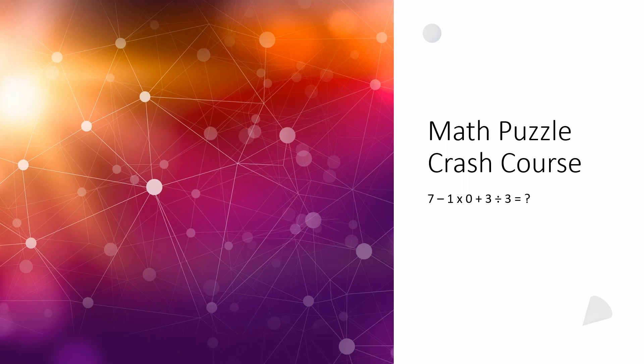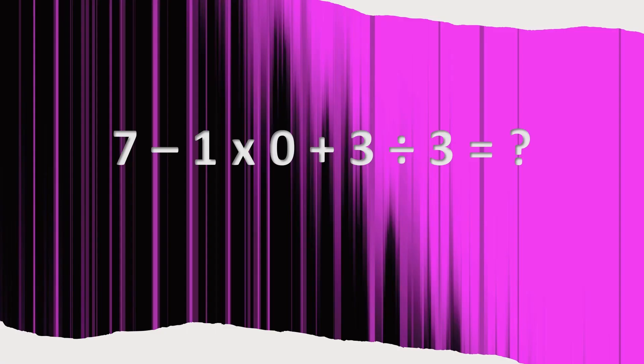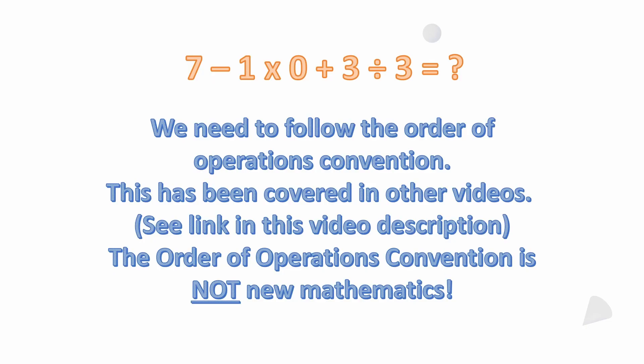So I wanted to review this one real quick. The problem that I saw was 7 - 1 × 0 + 3 ÷ 3. What does that equal? We've got subtraction, multiplication, addition, and division—a little bit of everything. Seeing a lot of people trying to solve it left to right, starting right out with 7 - 1 and then multiplying by zero, which is incorrect.